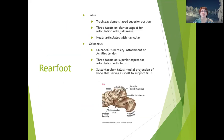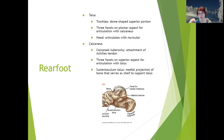The trochlea of the talus is the dome-shaped superior portion that articulates with the tibia and fibula. There are three facets on the plantar aspect for articulation with the calcaneus, and the head of the talus — the most distal part — articulates with the navicular. All of those joints are planar joints except for the talocrural joint, which is a hinge joint performing plantar flexion and dorsiflexion.